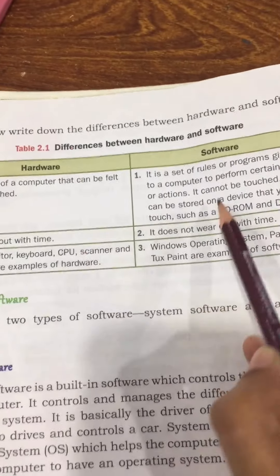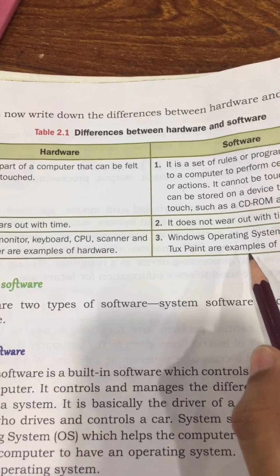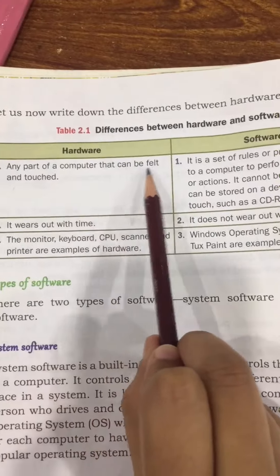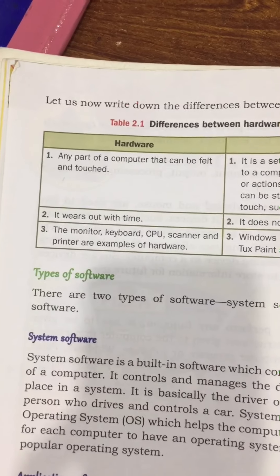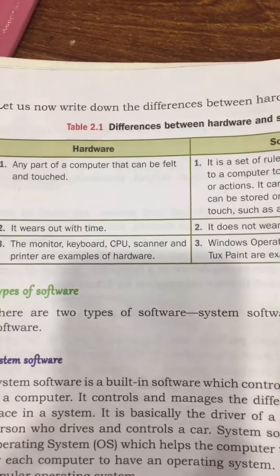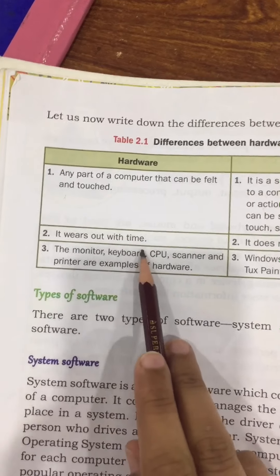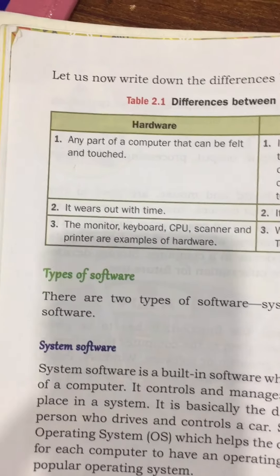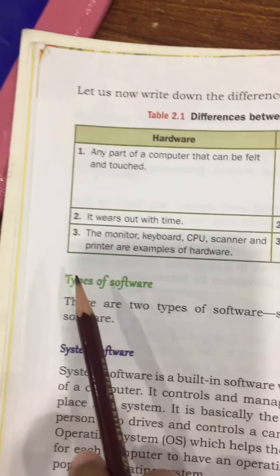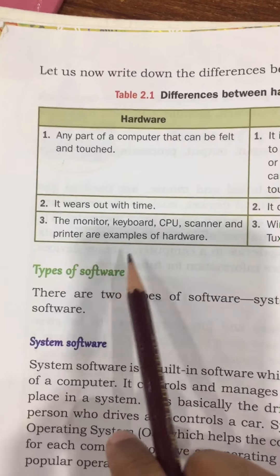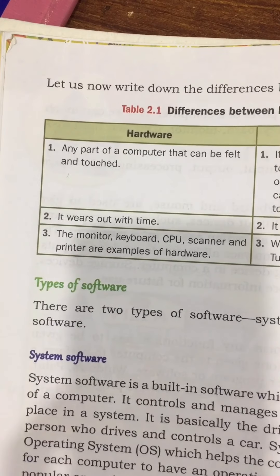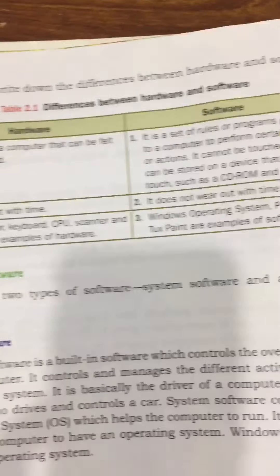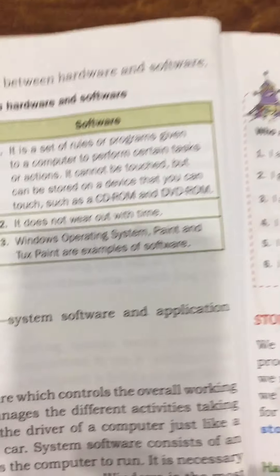Here is the box in which the differences between hardware and software are given. What is hardware? Any part of a computer that can be felt and touched — which we can feel and touch — is hardware. It wears out with time. Monitor, keyboard, CPU, scanner, and printer are examples of hardware.